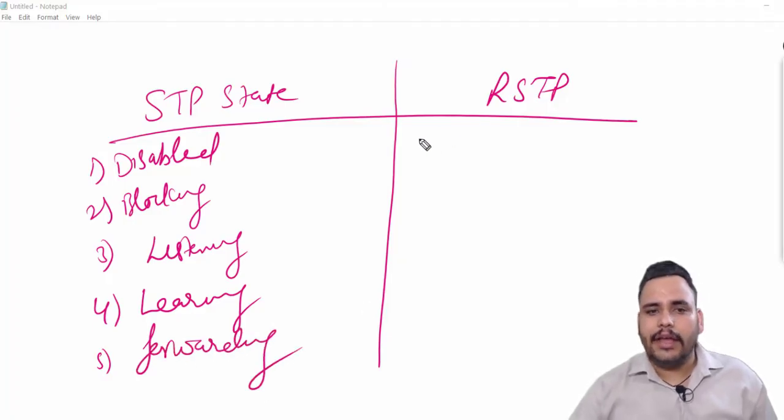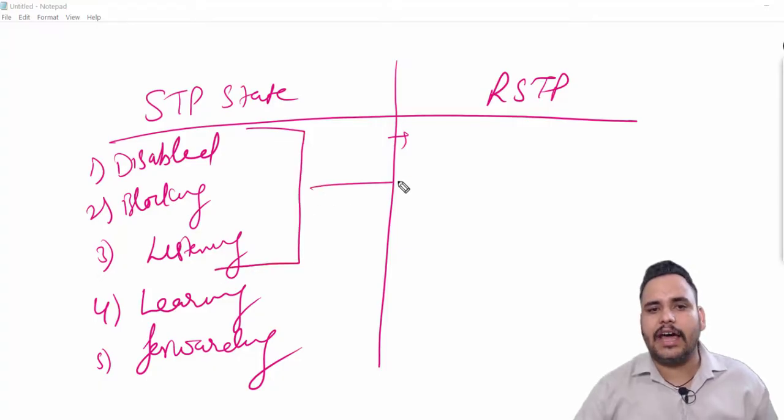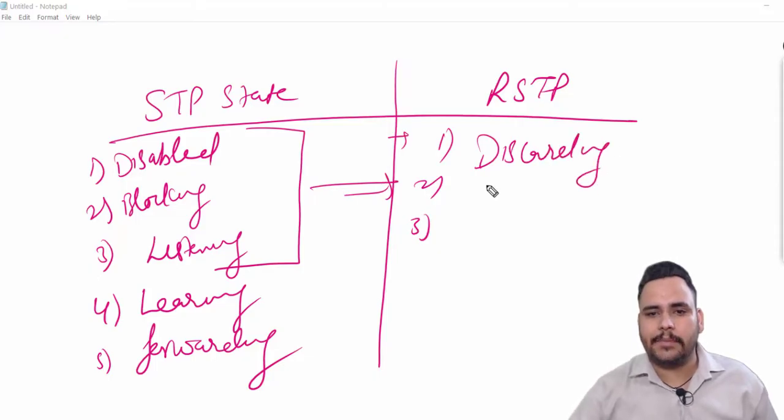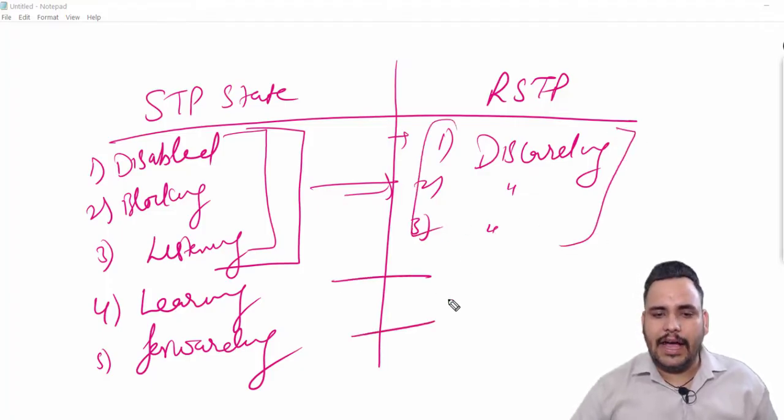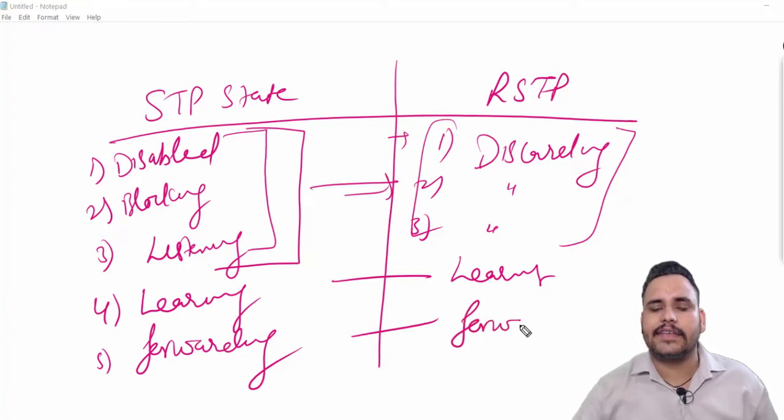In RSTP, which is Rapid Spanning Tree Protocol, these three states are converted into discarding state. The first three states are known as discarding state. The last two states, learning and forwarding, are same in STP.